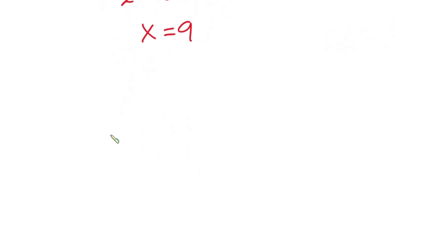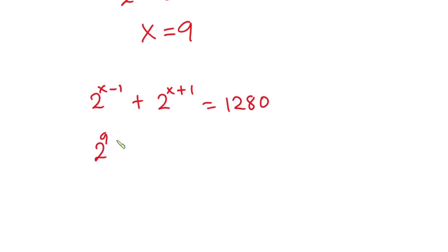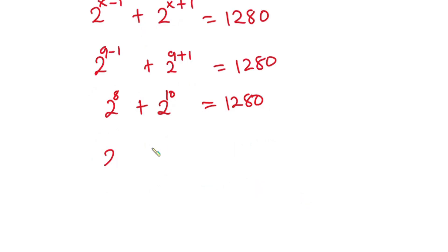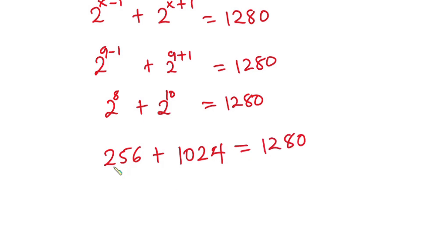Now that we know x equals 9, let's plug it into the original equation to verify. We get 2 to the power 9 minus 1 plus 2 to the power 9 plus 1 equals 1280. That is 2 to the power 8 plus 2 to the power 10. Now, 2 to the power 8 is 256, and 2 to the power 10 is 1024. Adding: 256 plus 1024 equals 1280. This matches, confirming our answer.